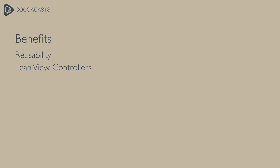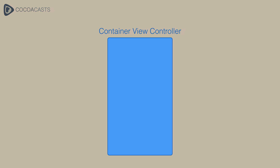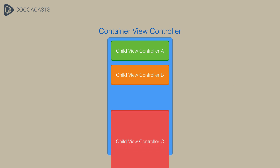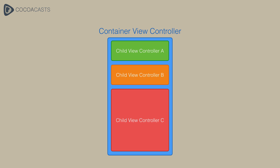View controller containment makes it much easier to keep view controllers lean. Complex user interfaces no longer need to be managed by a single view controller. By using a container view controller, a user interface can be split up into logical or functional components, each managed by its own view controller. This also makes it easy to deconstruct a UI and reuse components in various parts of a project. It is tempting to cram seemingly unrelated functionality into a single view controller, but this often leads to UIViewController subclasses spanning hundreds or thousands of lines of code.